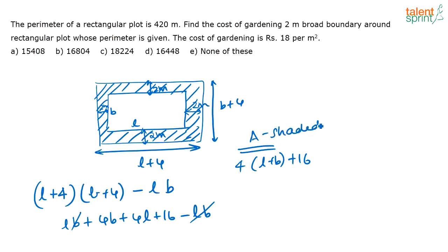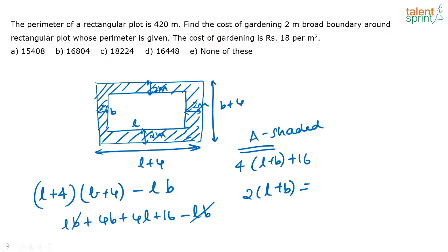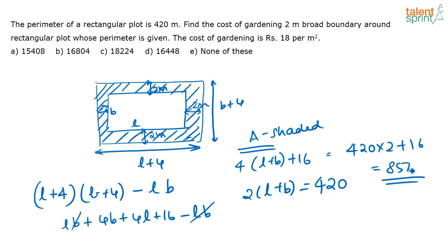We have the area of the shaded region as 4(L+B) plus 16. We already know that 2(L+B) is the perimeter of the inner rectangle, which is 420. So 4(L+B) is 420 times 2, which gives 840. Adding 16, the total area is 856 meter squared.